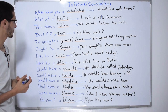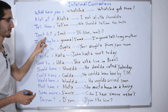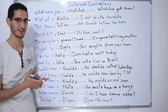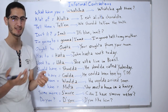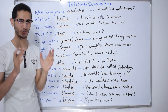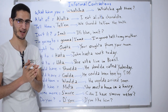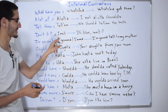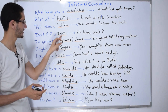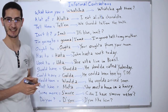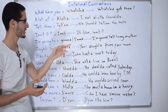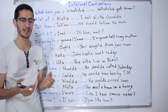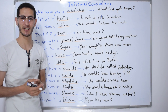Another example is 'isn't it.' Native speakers don't say 'isn't it' — that's slow and not practical. They say 'innit' — spelled I-N-N-I-T. For example: 'It's blue, innit?' or 'Today is a beautiful day, innit?' It's a very common tag question contraction.